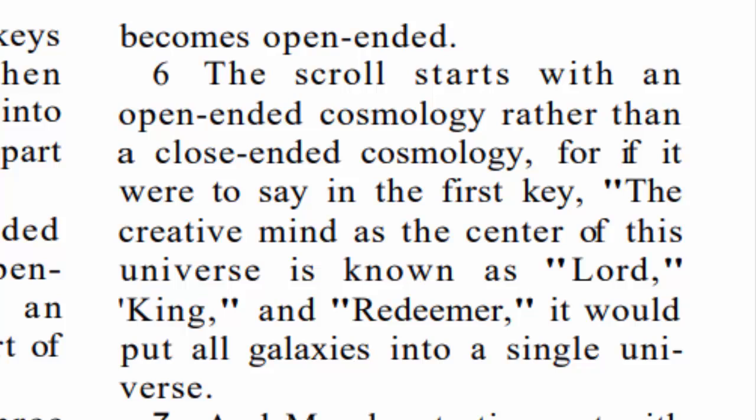Verse 6 explains why the order of these three keys was set this way. It says the scroll starts off with an open-ended cosmology rather than a closed-ended cosmology. It says: for if it were to say in the first key 'the creative mind as the center of this universe is known as Lord, King, and Redeemer,' it would put all galaxies into a single universe.